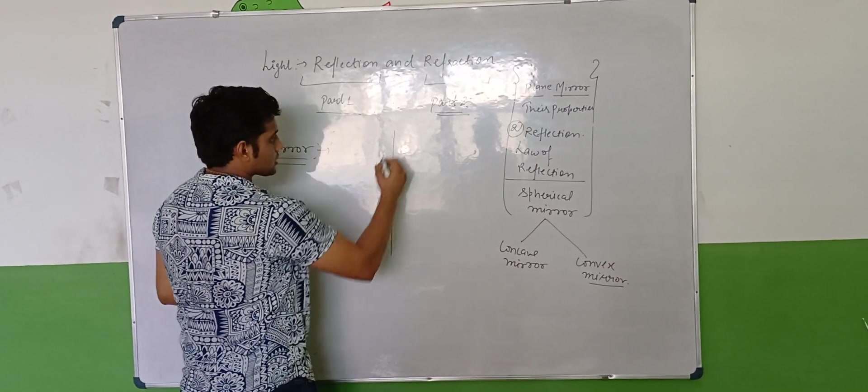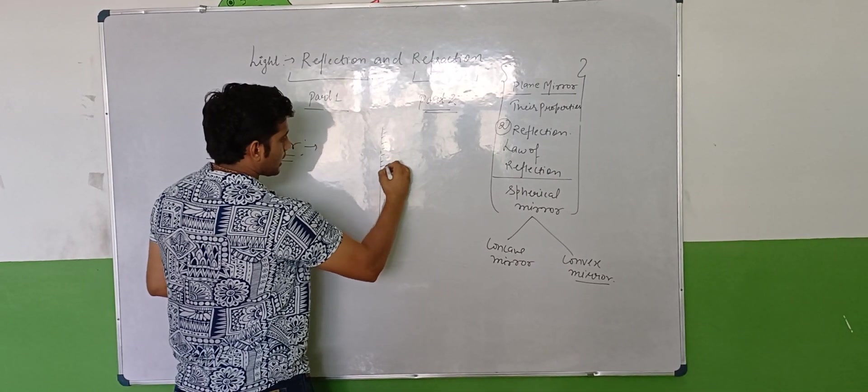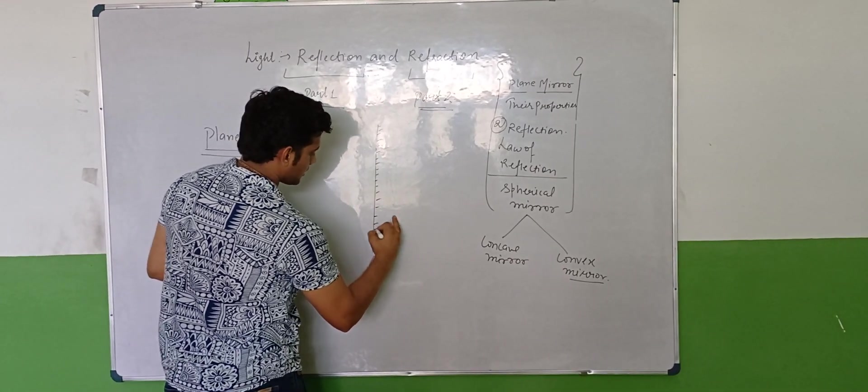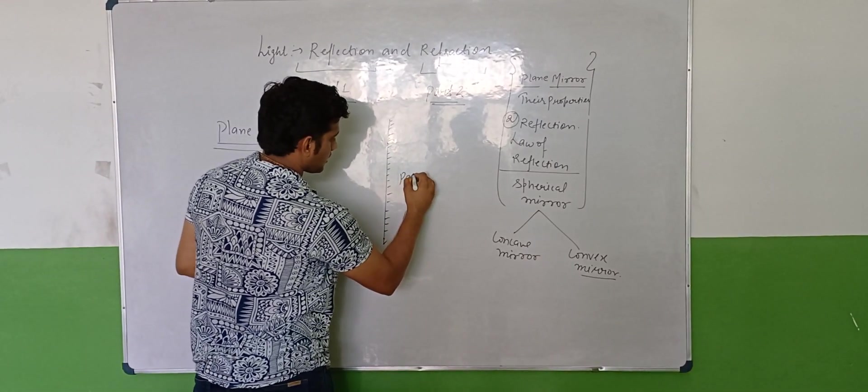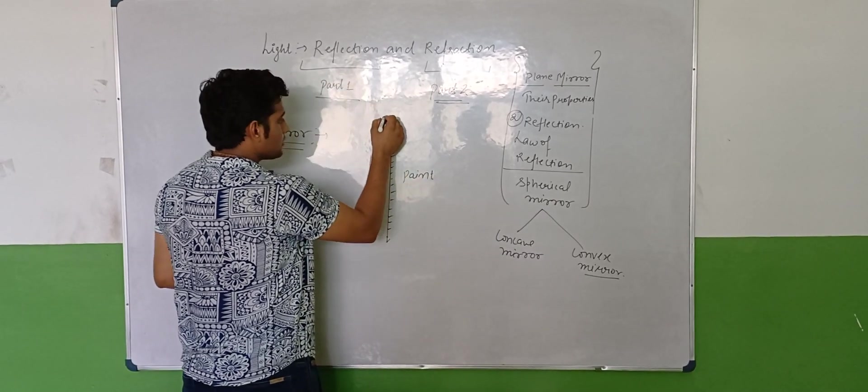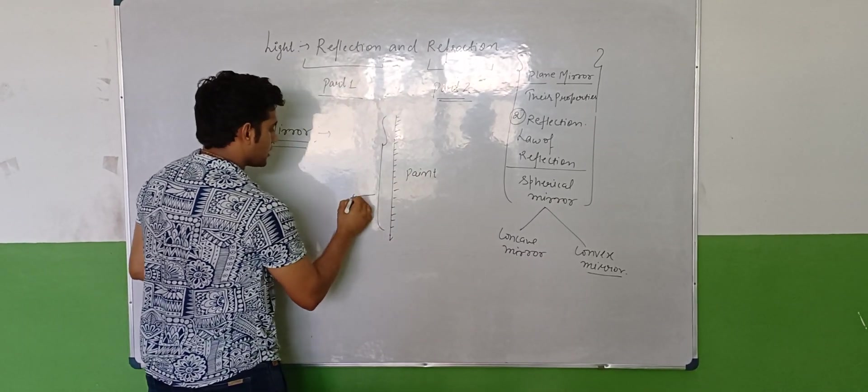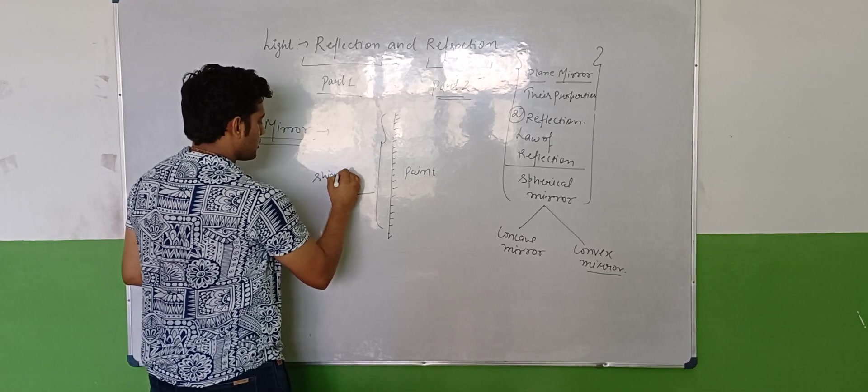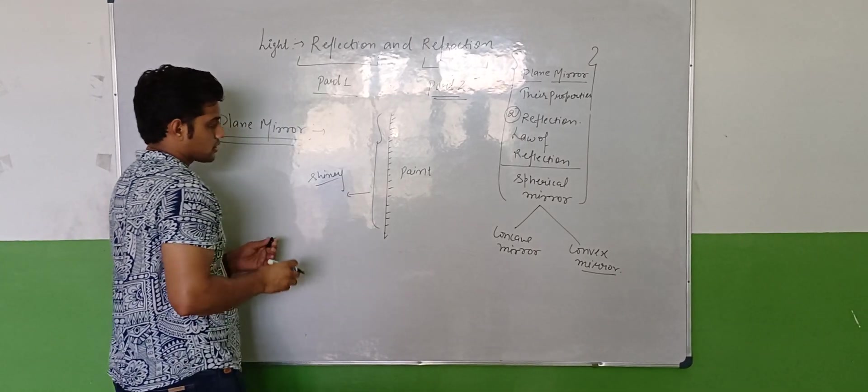They have two parts. One part is Painted and the second surface is Shine. You can call it Lustre, it is Shine.